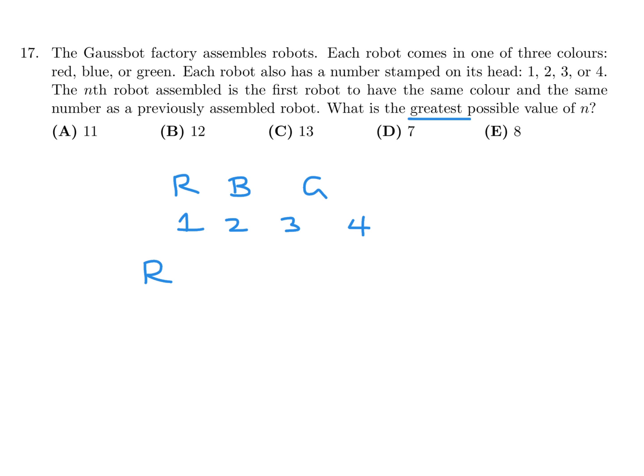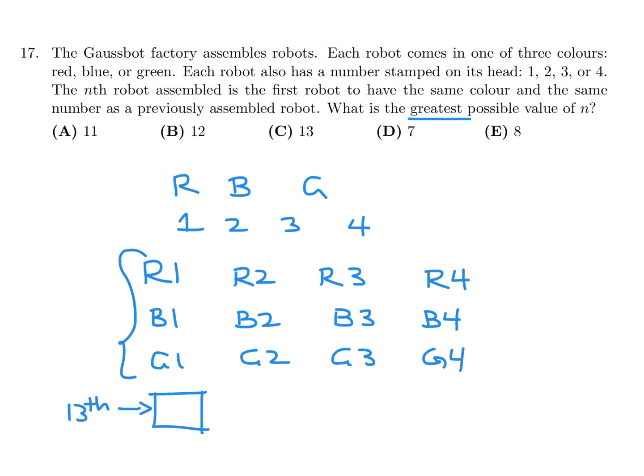So for red, we want the greatest possible, so let's exhaust our possibilities. You can have R1, R2, R3, and R4. Same thing for B, B1, B2, B3, B4. For G, G1, G2, G3, and G4. Now, at this point, the very next robot will guaranteed be one of those 12, because you've exhausted all the possibilities. And that very next robot is the 13th robot. And therefore, number 17 is C.